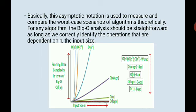Basically, this asymptotic notation is used to measure and compare the worst case scenarios of algorithms theoretically. The Big O analysis should be straightforward as long as we correctly identify the operations that are dependent on n, the input size. Here I have the running time complexity in terms of Big O. Order of n exponential, C to the power n, then n to the power C, n log n, then linear, and the best is log n. Log n takes minimum running time complexity for whatever the input size. Exponentials grow very fast—in a very small input size they reach a very high amount of time.